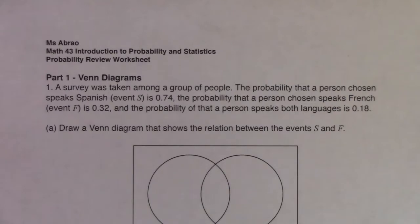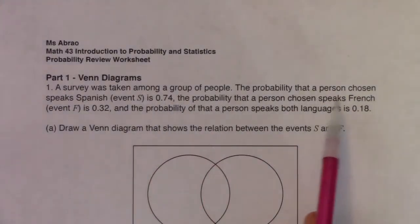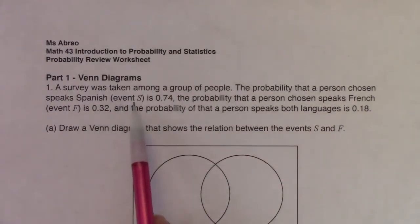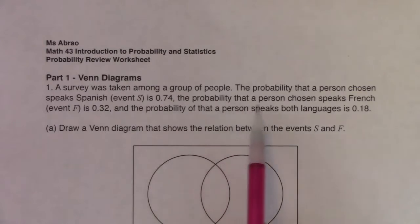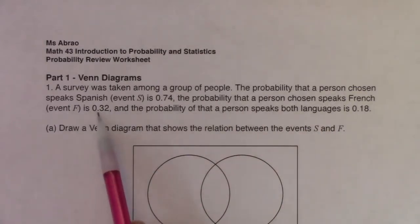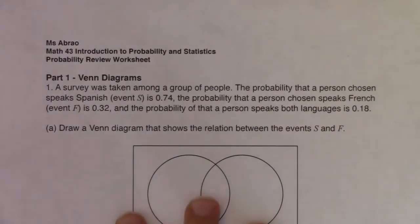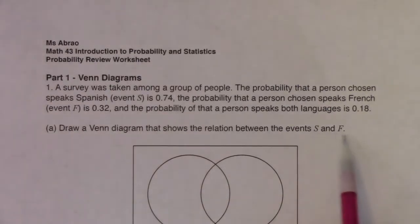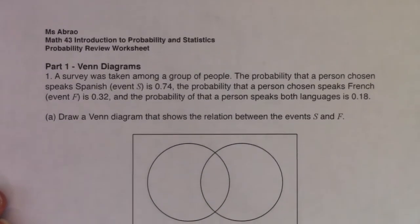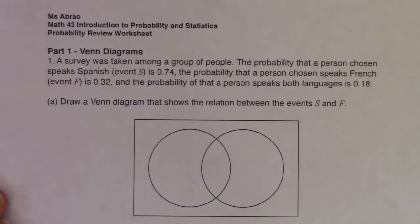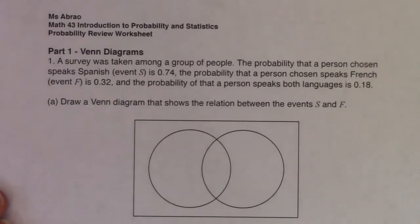Number one, we've got a Venn diagram. A survey was taken among a group of people. The probability that a person chosen speaks Spanish is 0.74, the probability that a person chosen speaks French is 0.32, and the probability that a person speaks both languages is 0.18. We need to draw a Venn diagram showing the relationship between events S — speaking Spanish — and F — speaking French.